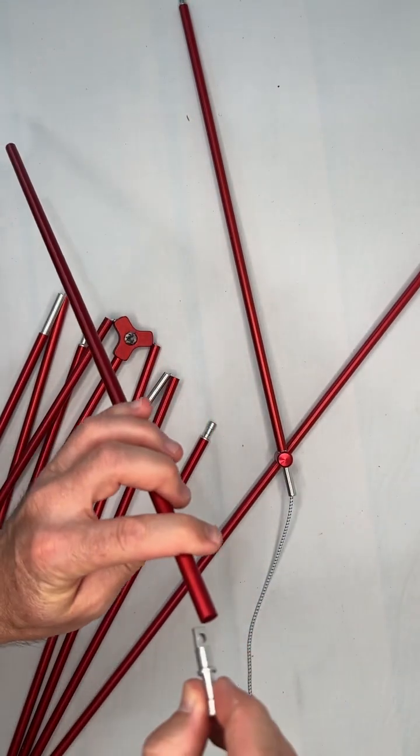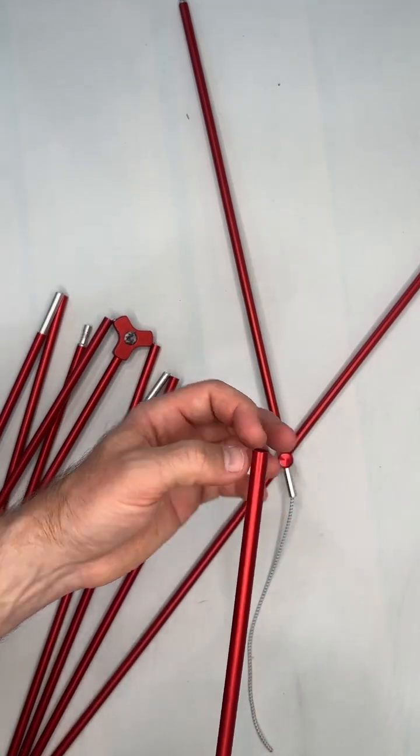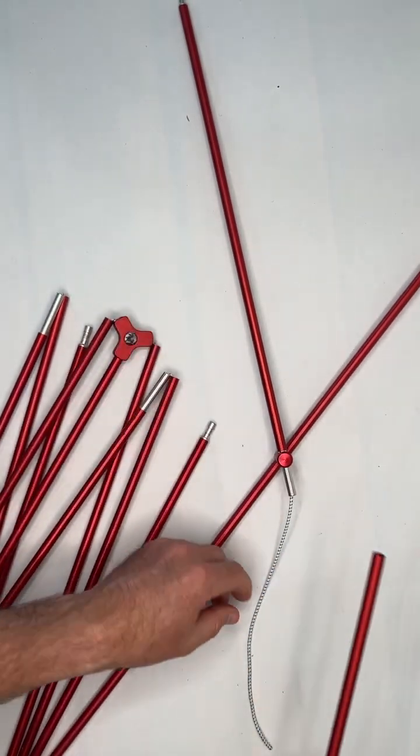Otherwise, you can use either side of this if it doesn't have the threading. The threading would just have a little pinch and a little bump on the inside so that threading can go through the bump.